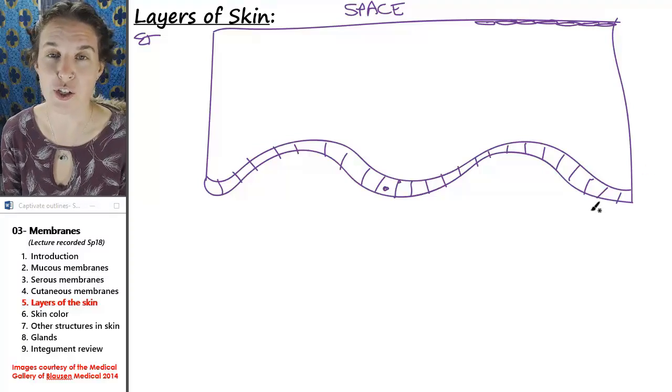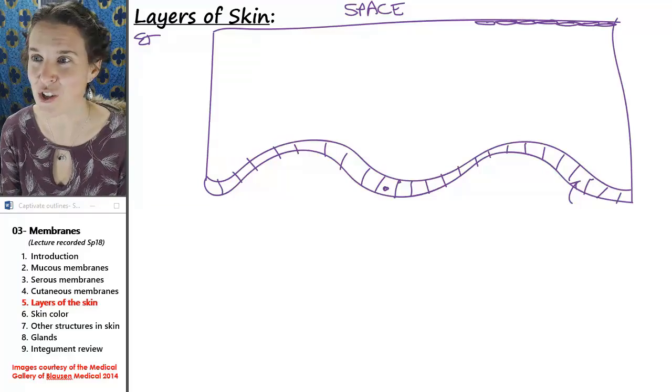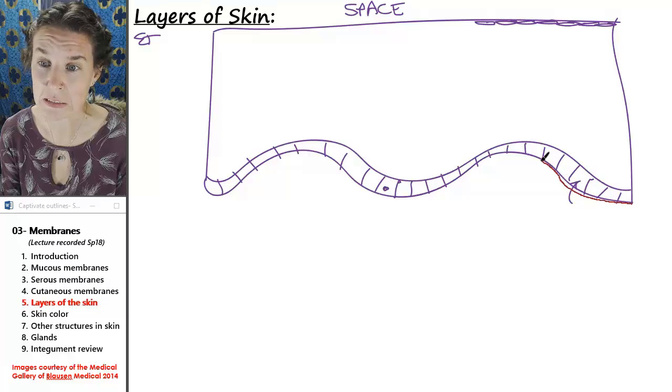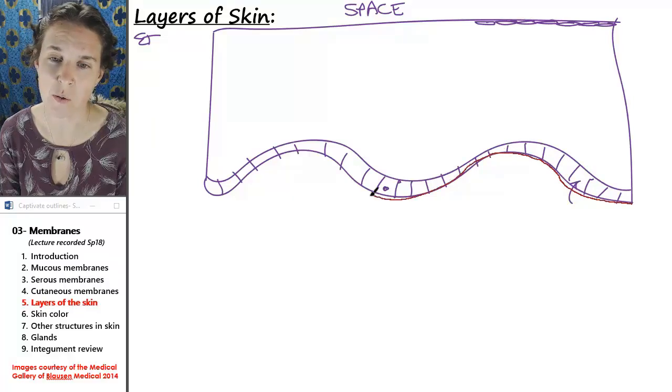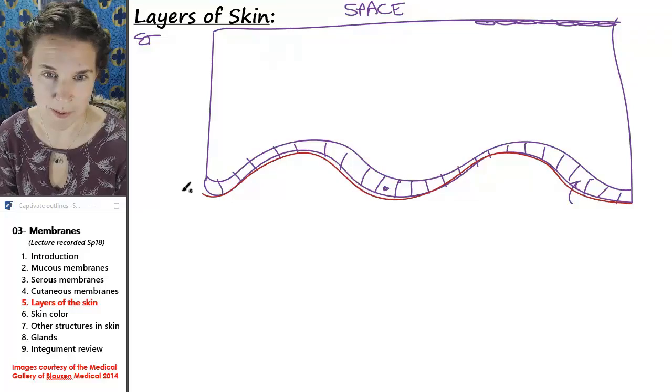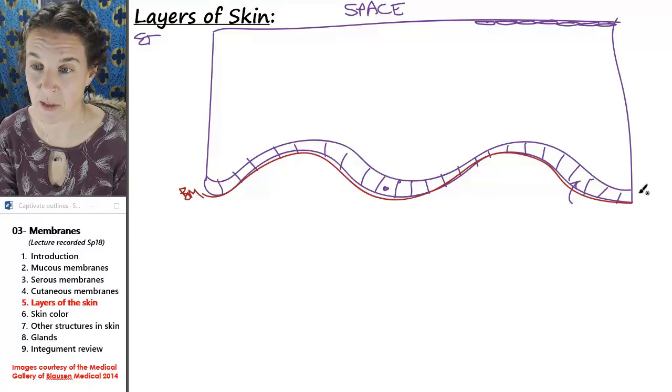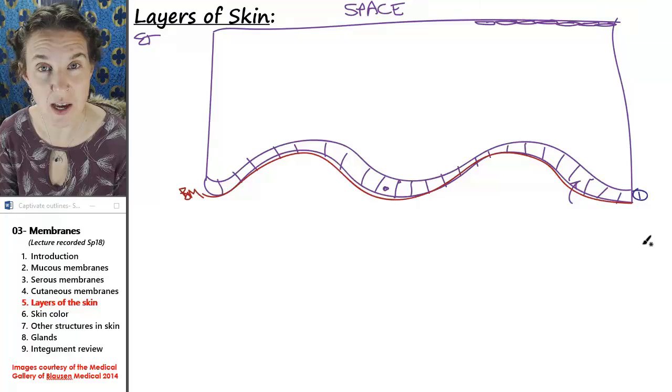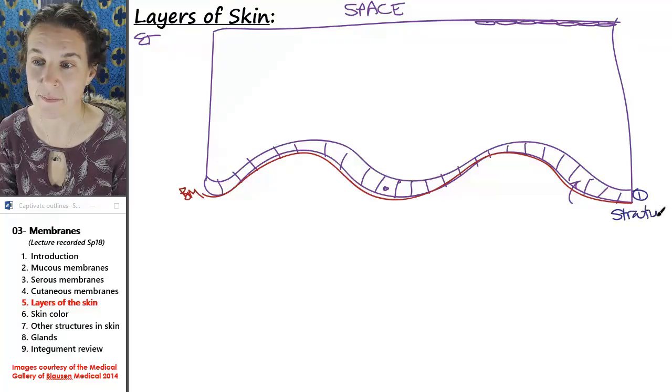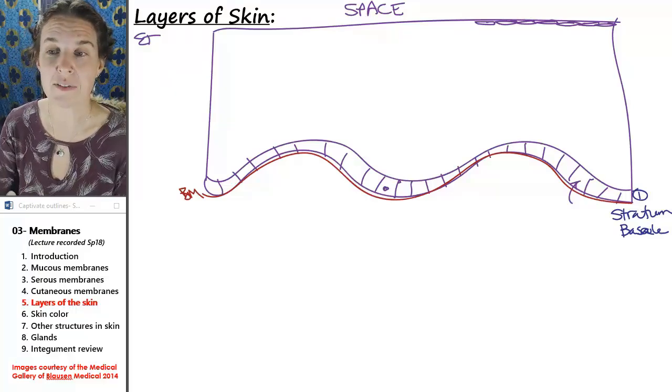All of my layers are called stratums. This layer, this one layer that is attached to the basement membrane. There's my basement membrane. This guy right here that I just pointed my arrow to, this is the deepest layer of the epidermis, and it is stratum basale.